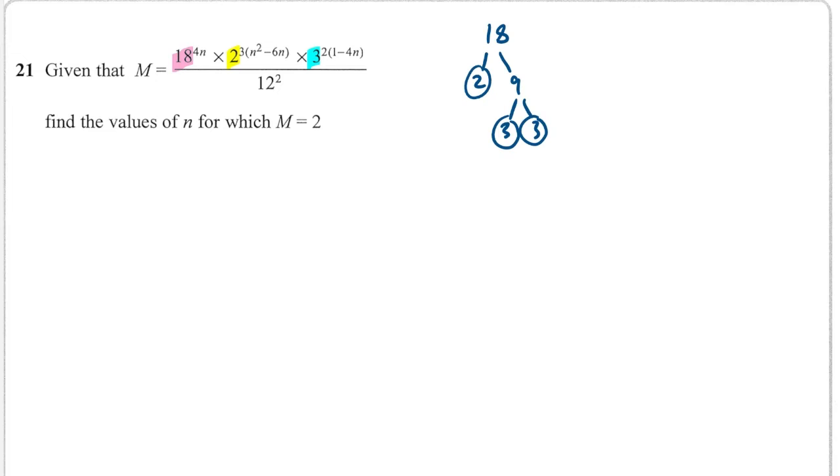So 18 is 2 times by 3 squared, and that's to the power of 4n. And we've also got 2 here. Well, that's 3n squared minus 18n. And then here I've got 3 and that's 2 minus 8n.